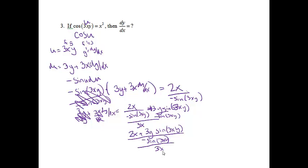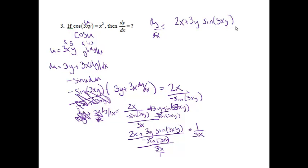We're going to make the 3x over 1, and since I have a fraction divided by a fraction, I can multiply by the reciprocal. So dy/dx equals 2x plus 3y sine of 3xy, all over negative 3x sine of 3xy. Whew, that was a doozy!